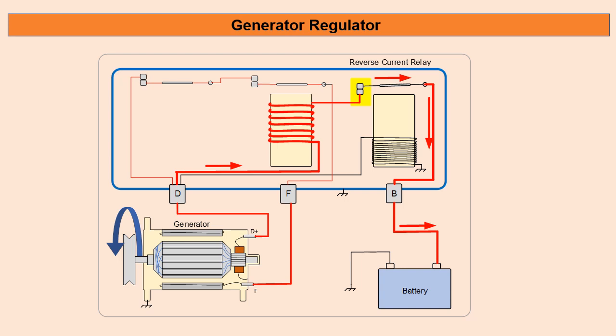You can see the current path going from the D terminal through the current regulator, through the contacts and into the battery. So this is where our battery begins to charge.